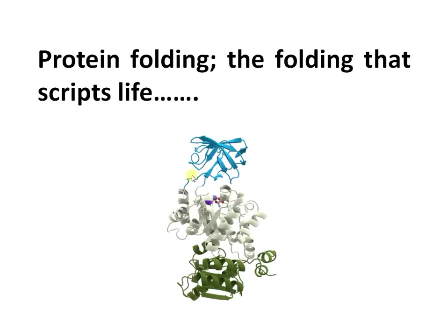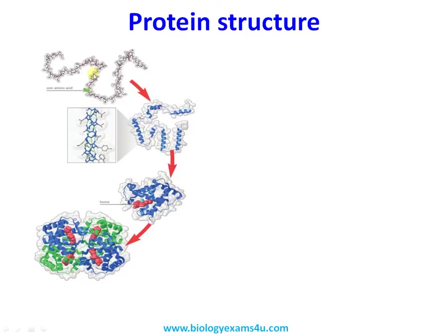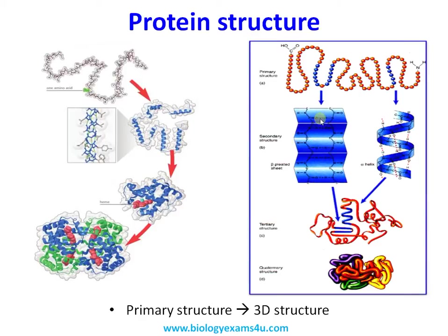This is a protein structure. There is a primary structure consisting of amino acids joined by peptide bonds. The secondary structure is formed when the primary structure is folded by bonds like hydrogen bonds. In the tertiary structure, further folding of the secondary structure occurs, giving the biologically active conformation. In certain proteins, many polypeptide chains called subunits come together to form the quaternary structure.